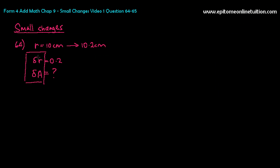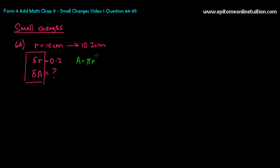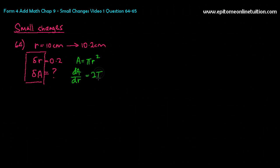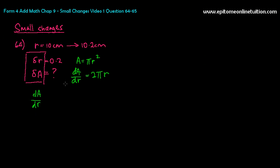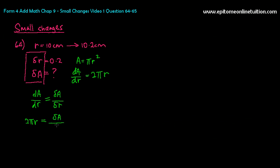Now you're going to form dA/dR and equate it with delta A over delta R. You use the formula based on what they're asking for — they're asking for area of a circle, so area equals pi R squared. Therefore dA/dR equals 2 pi R. Note: small changes does not have chain rule; only rates of change has chain rule. Here you just form the equation: dA/dR is approximately equal to delta A over delta R.